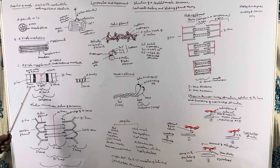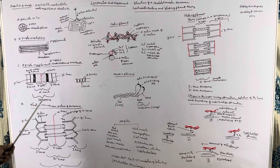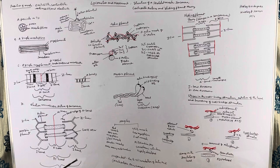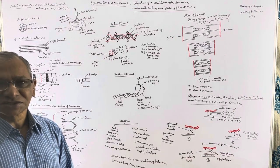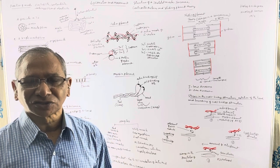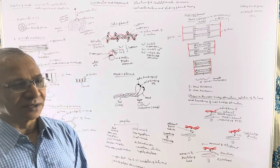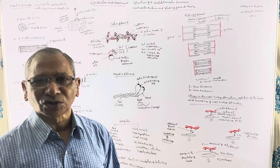The part of the myofibril extending between two successive Z lines is known as sarcomere. Sarcomeres are the structural and functional units of muscle contraction. In a muscle fiber we find thousands of these sarcomeres.